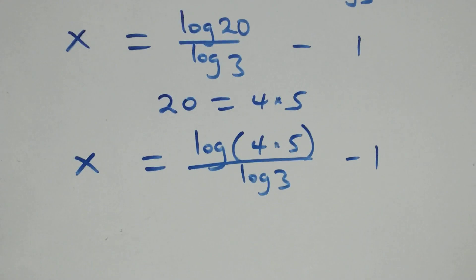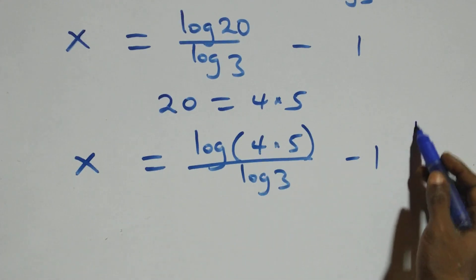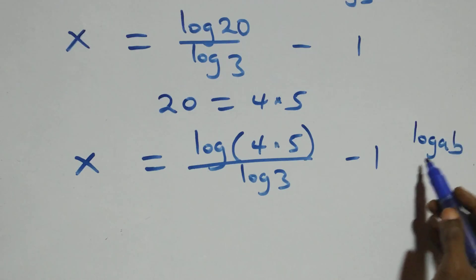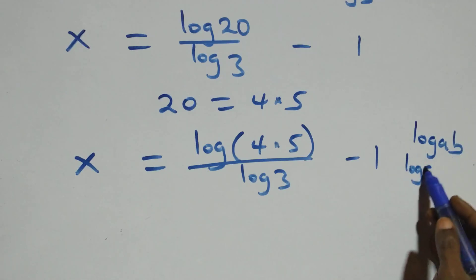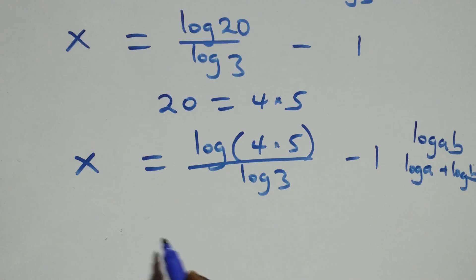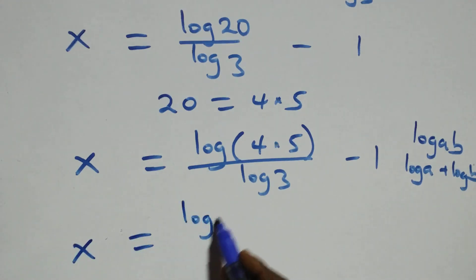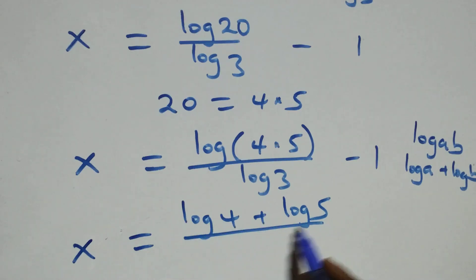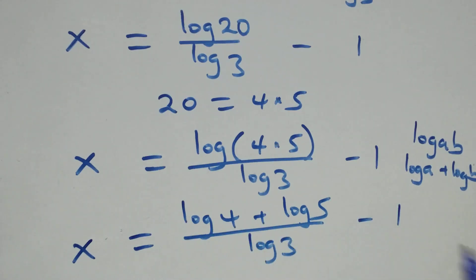This also follows the law of logarithms: log of a times b is the same as log a plus log b. So all we have becomes x equals log four plus log five, all over log three, minus one.